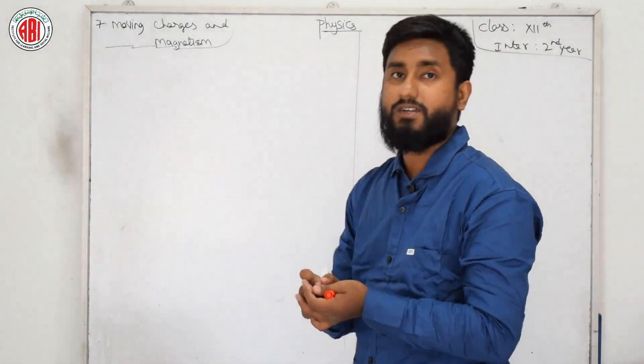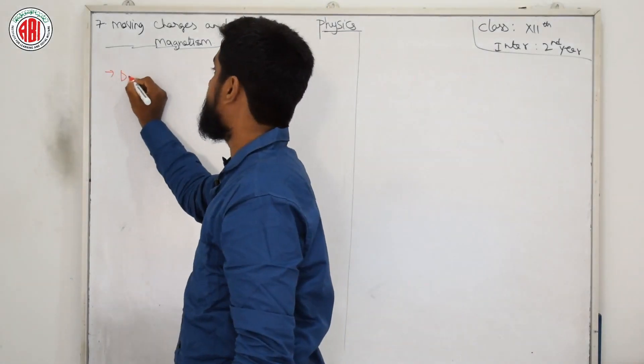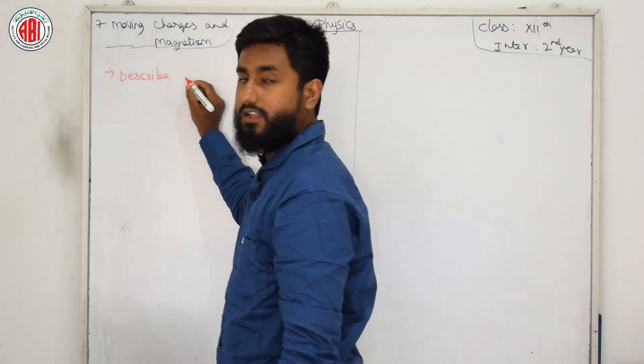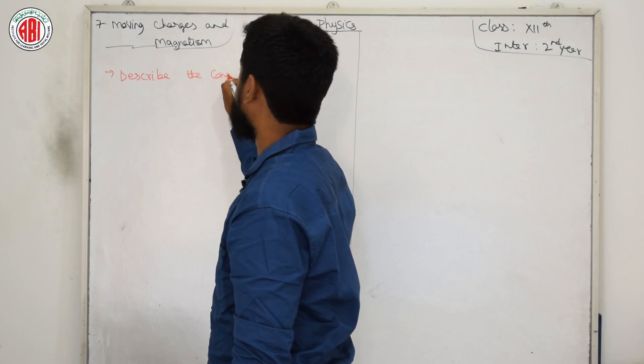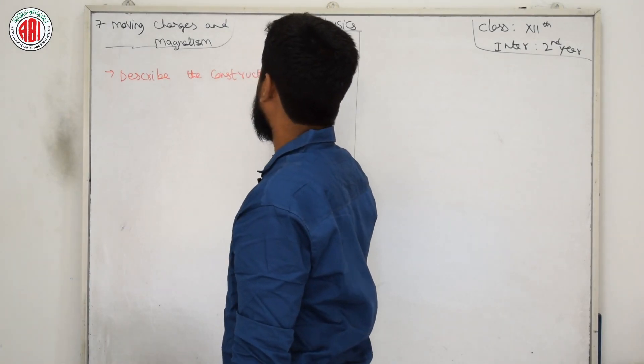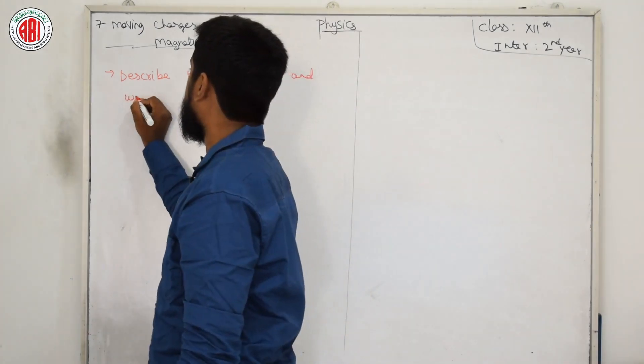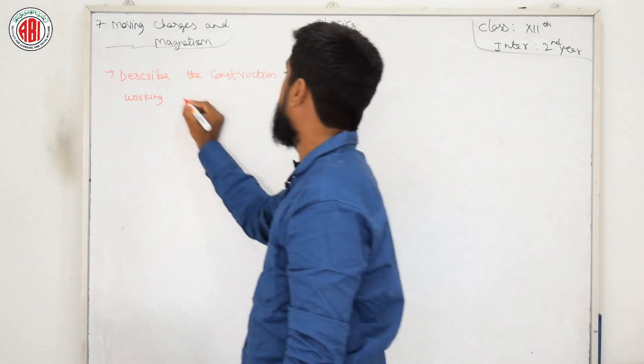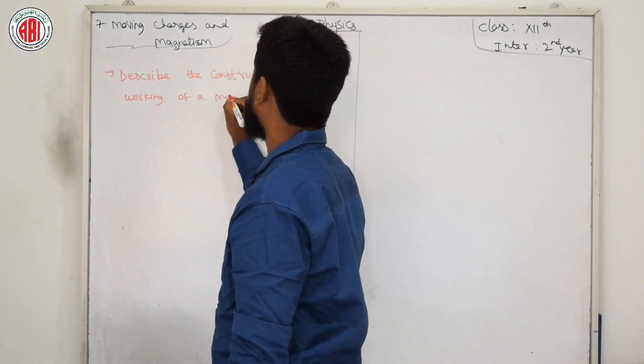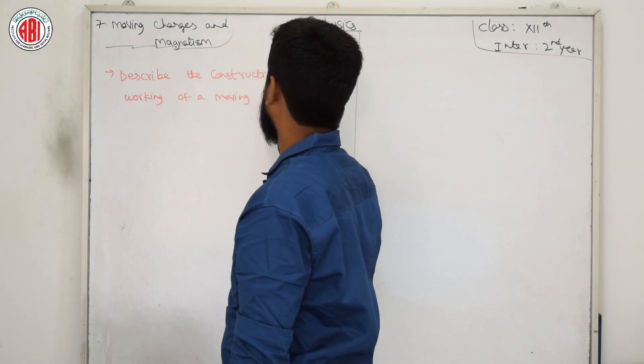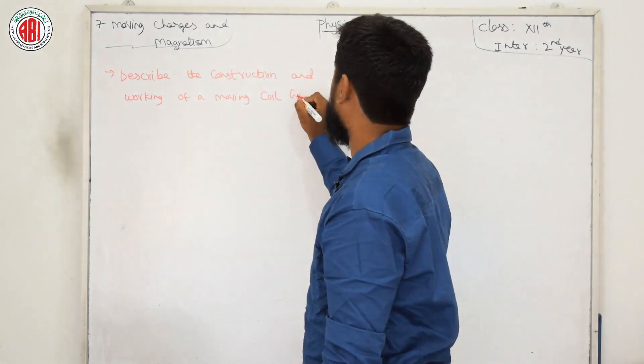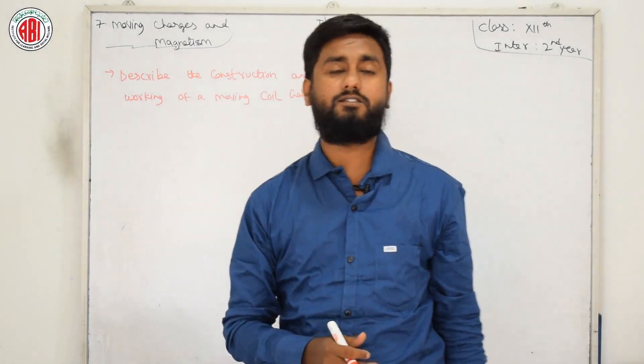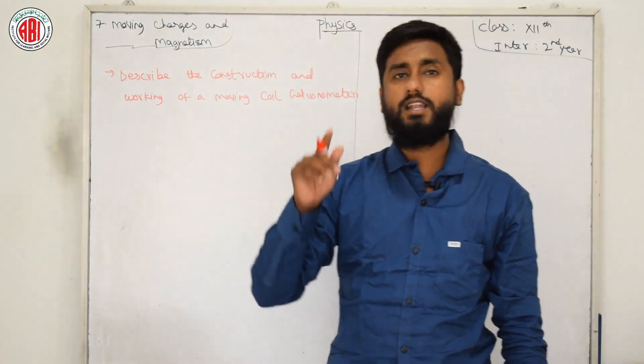Today I will describe you one topic, and the name of the topic I want to write completely. Describe the construction and working of a moving coil galvanometer. What is galvanometer? We have already come across in our chapter number six, Current Electricity.